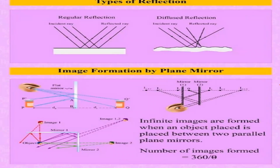Regular reflection and diffused reflection — you might have studied these in class 8 as well. Image formation by plane mirror: infinite images are formed when an object is placed between two parallel plane mirrors and we stand in between. The number of images formed is given by the formula 360 divided by theta, where theta is the angle between the two mirrors.